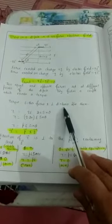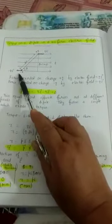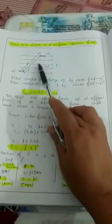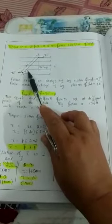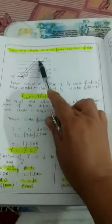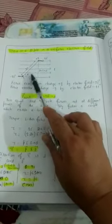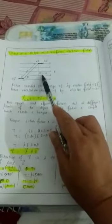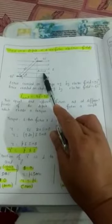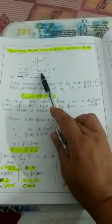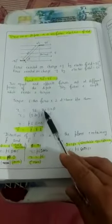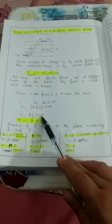Torque is a rotational force. The magnitude of torque equals either force multiplied by the perpendicular distance between them. One force acts here and the second force acts here. Drawing the perpendicular, theta is the angle between the electric field and the dipole. In this right-angle triangle, the perpendicular distance between the forces is 2A sine theta. So torque equals QE times 2A sine theta. Since Q times 2A is the electric dipole moment P, torque can be written as PE sine theta.